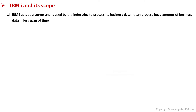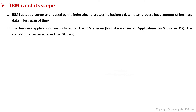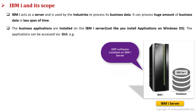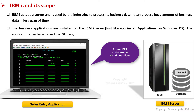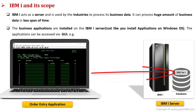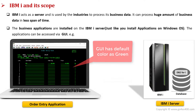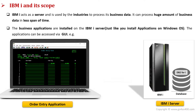IBM i acts as a server and is used by many industries to process their business data. It can process a huge amount of business data in a very short span of time. The business applications are installed on the IBM i server — this is just like installing applications on a Windows operating system. The applications can be accessed by GUI. For example, an ERP software installed on IBM i can have modules like the order entry module, which can be accessed on the IBM i server to perform order entry business activities. Once an order is entered, it is saved in the integrated database, DB2 for i. The GUI appears in green color, which is the default color setting of the IBM i emulator, and hence many people call IBM i the green screen.